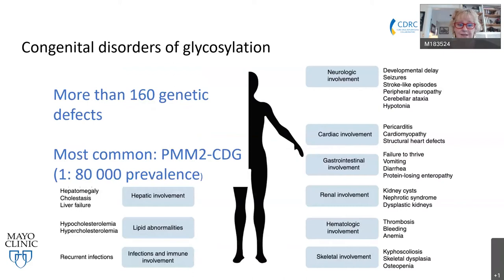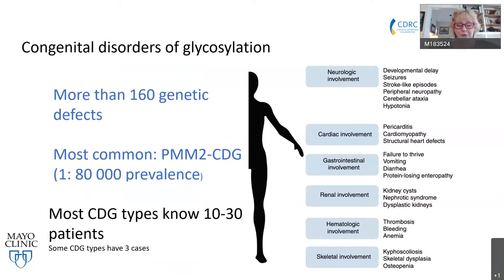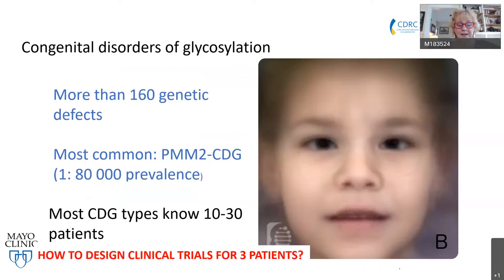As I mentioned, there are more than 160 different types. The most common type is PMM2-CDG — that's the name of the gene and the disorder — occurring in about 1 in 80,000, which is still a really rare disease. But most CDG types are known in only 10 to 30 patients, and some CDG types have only three cases ever known. So how do we design clinical trials for three patients?